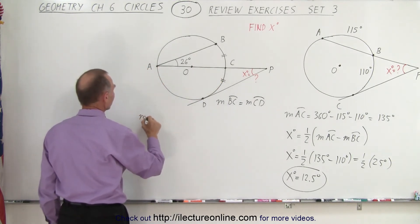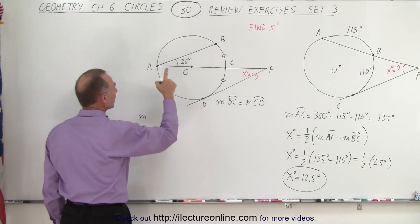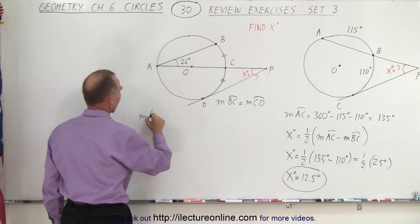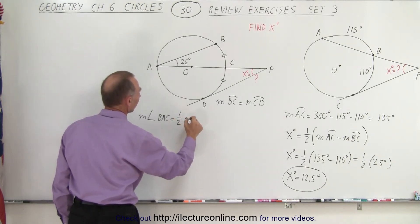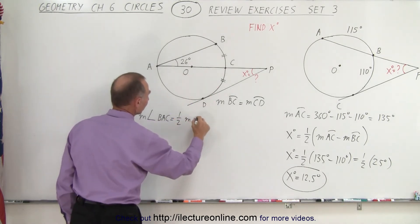And we can begin by saying we have a relationship between this angle right here and this measure right here. What we can say here is that the measure from B, A, C, so the measure of the angle from B to A to C, must equal one-half the measure of the arc length from B to C.